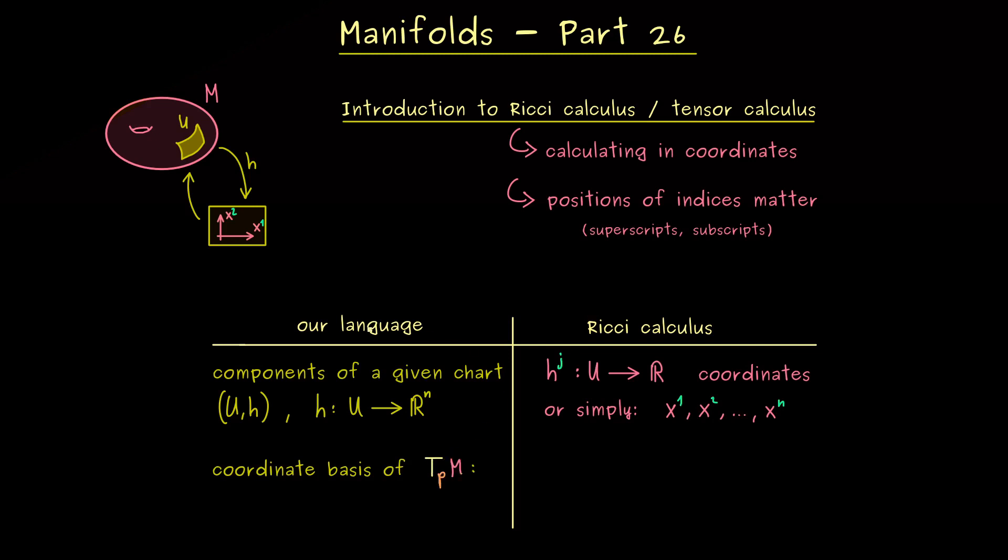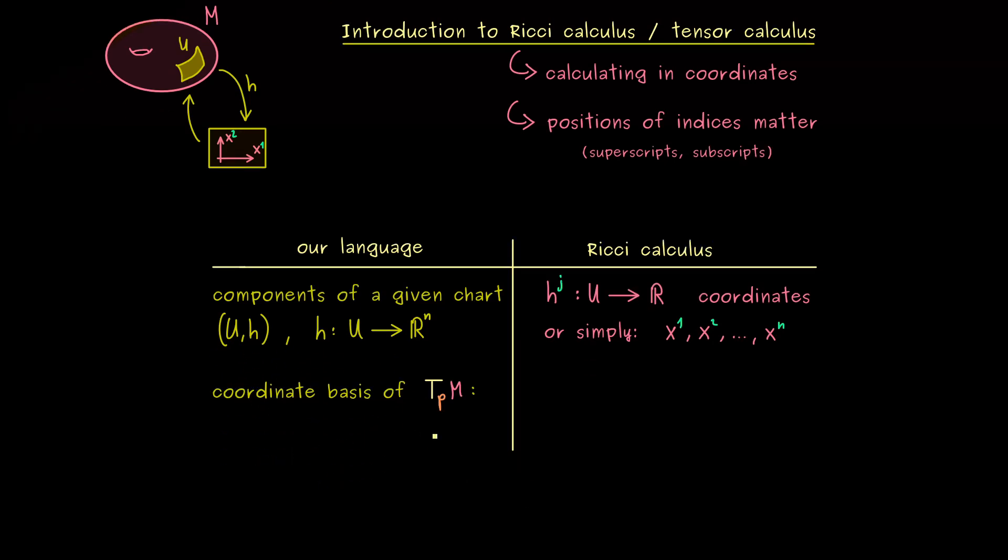There you know, we have already introduced a very short notation for this standard basis of the tangent space. Namely, we use the parameterization φ to push the canonical basis in R^n forwards. And please recall, for sub-manifolds we immediately saw the relation with the partial derivatives of φ. Therefore, in the Ricci calculus we also use this del operator, but now with respect to these coordinates. In particular, in the denominator we have superscripts again.